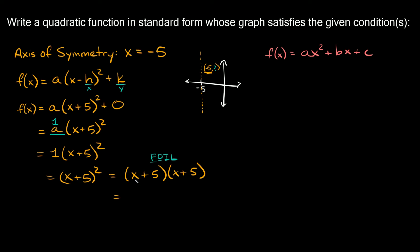We're going to go first which is x squared, then we're going to go outer which is positive 5x, and then we're going to go inner which is positive 5x also, so plus 5x, and then last is positive 25.